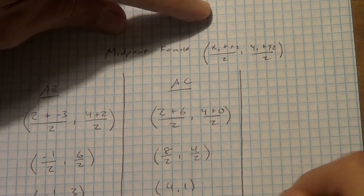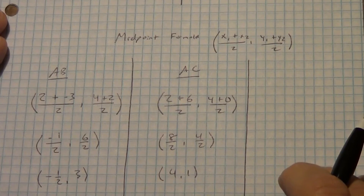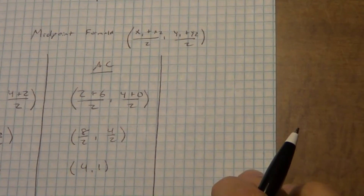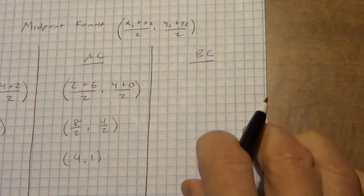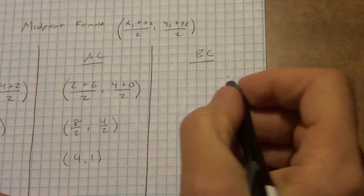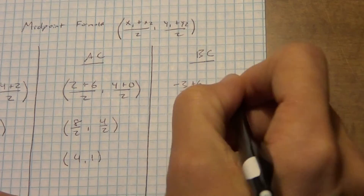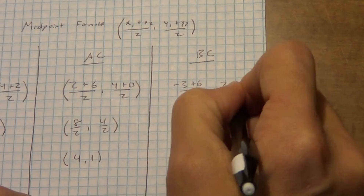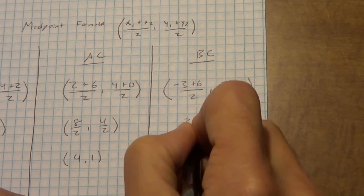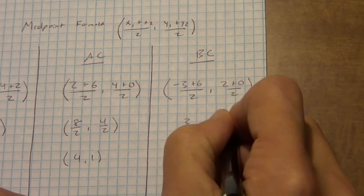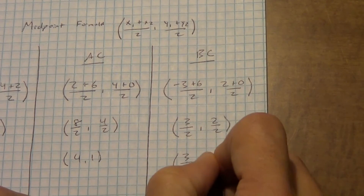We still have our third side to do. Now we're going to do side BC: negative 3 plus 6 over 2, comma 2 plus 0 over 2. Negative 3 plus 6 is 3 over 2, comma 2 over 2, which gives us 3 over 2, comma 1.